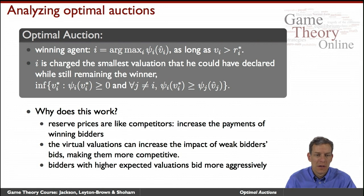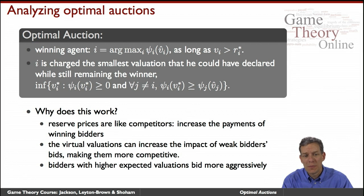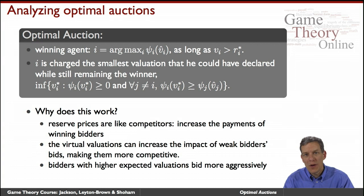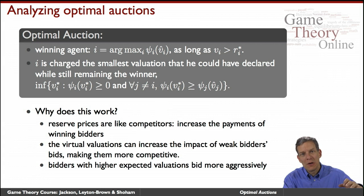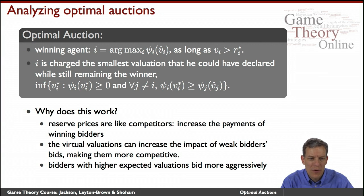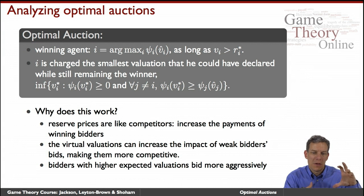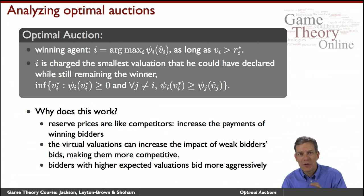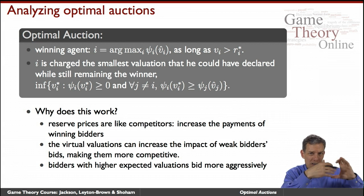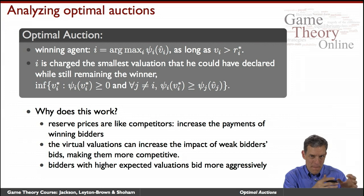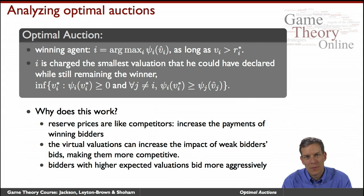Why does this work? Reserve prices act like competitors — they increase the payments of winning bidders. Virtual valuations play a role in deciding the winner when there are strong asymmetries. Without adjustment, a weak bidder might not genuinely compete with a strong bidder. By adjusting relative to virtual valuations, weak bidders become more competitive. This has a plus and a minus: sometimes the good sells at a lower price to the weaker bidder, but other times it forces the stronger bidder to pay more — effectively increasing competition and making bidding more aggressive.